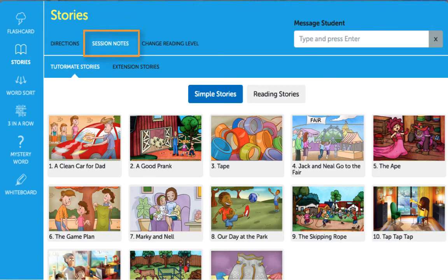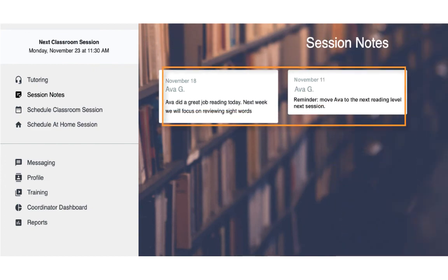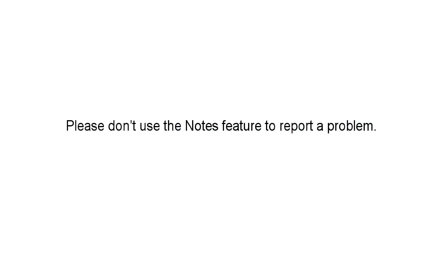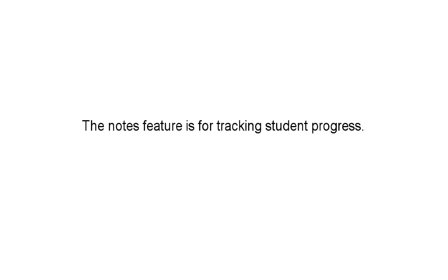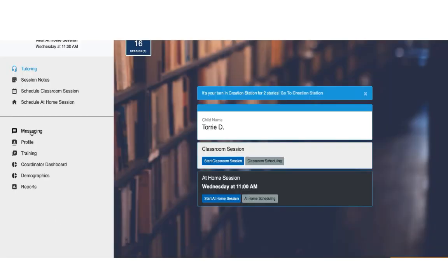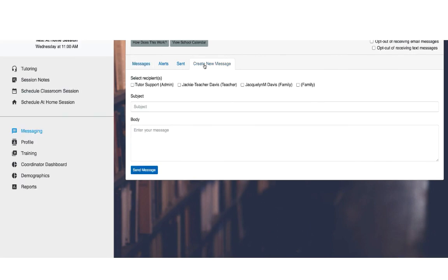To record notes during an active session, click on the session notes link found on each activity page and enter your comments. You can also record notes before or after an active session or review previous notes by clicking on the notes icon located in the user menu on the homepage. Please do not use notes to report a problem or ask a question. Teachers in the TutorMate team will not be reviewing your notes. The primary function of this feature is for you to track, for yourself, your pupil's success and progress. If you would like to communicate with your teacher, please use the messaging section of the tutoring platform.